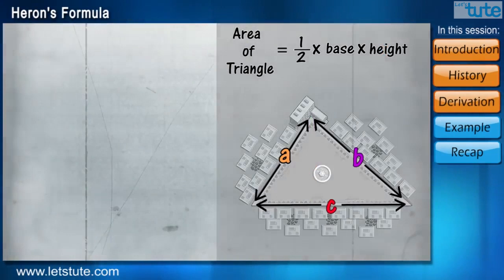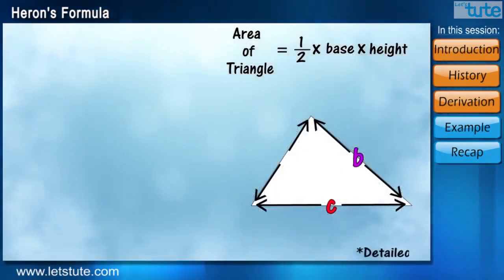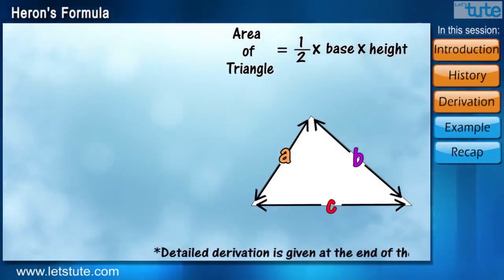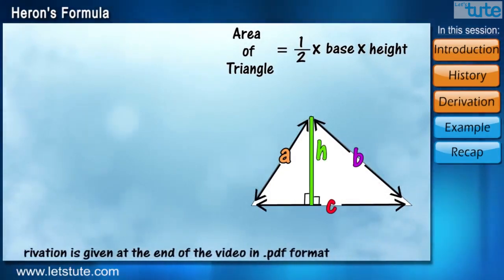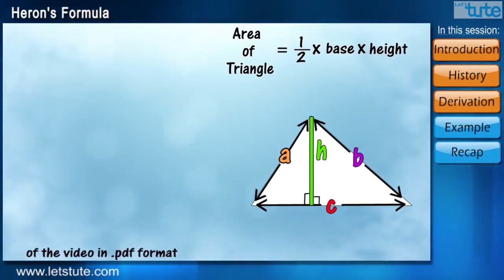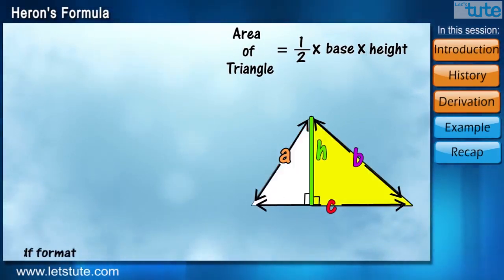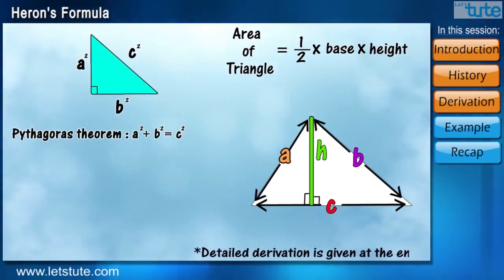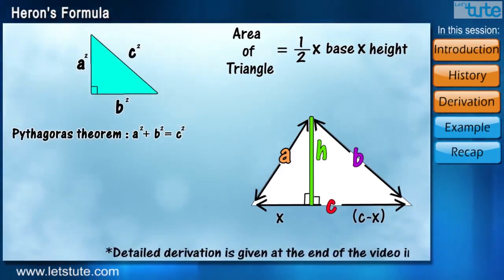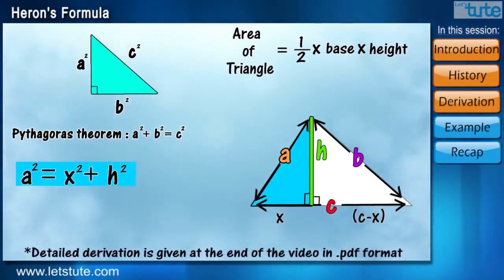First, we take any random triangle and let the side length be A, B and C. Here, we draw a perpendicular height and call it H. Now, we have two right angle triangles. And as soon as we see right angle triangles, the first thing that comes into the mind is Pythagoras theorem.